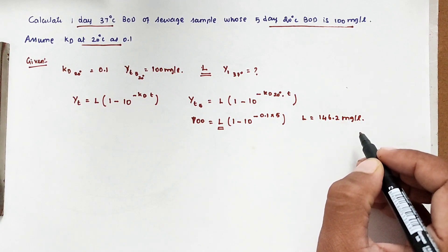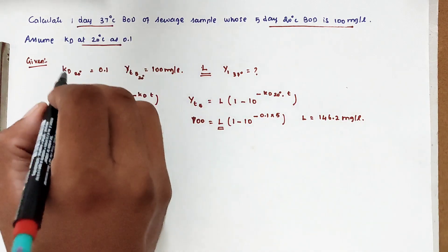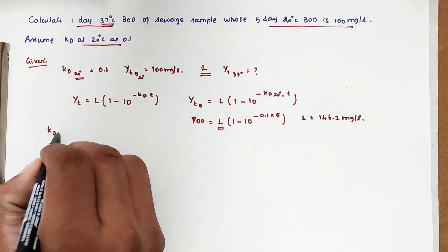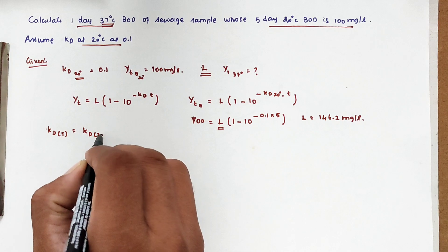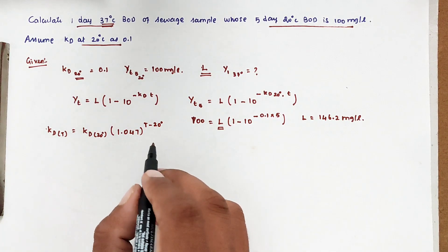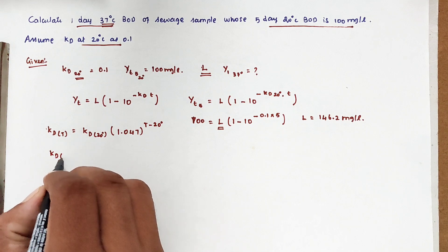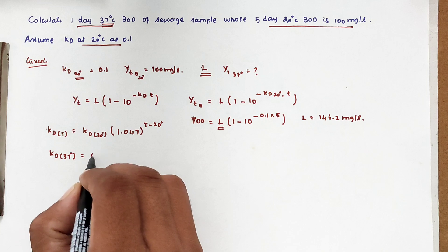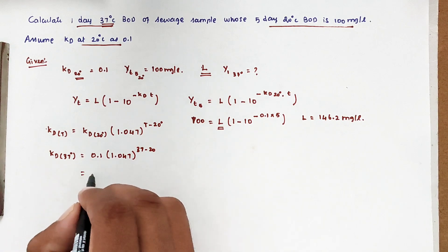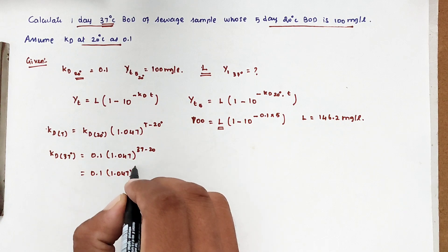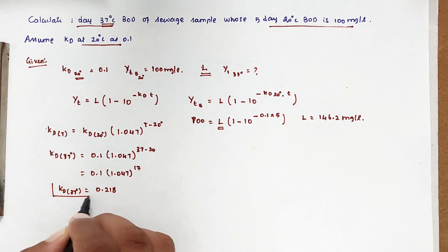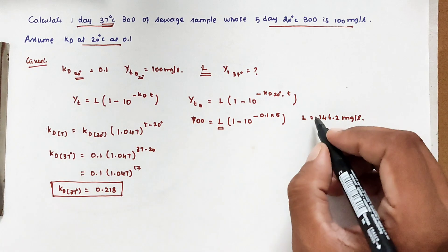Next, we need to find KD at 37°C. KD at 20°C is known, so we use the temperature correction formula: KD(T) = KD(20) × 1.047^(T - 20). Substituting: KD(37) = 0.1 × 1.047^(37 - 20) = 0.1 × 1.047^17. Solving this gives KD at 37°C equal to 0.218.